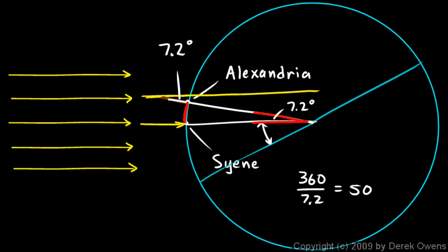So, it stood to reason that this distance, the distance from Syene to Alexandria, was 1/50th of the entire distance around the earth. So, then he realized, if I can just measure the distance from Alexandria to Syene, I can calculate the entire distance around the earth. It's just going to be that distance multiplied by 50.